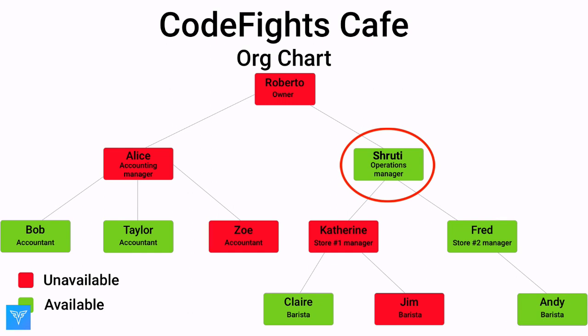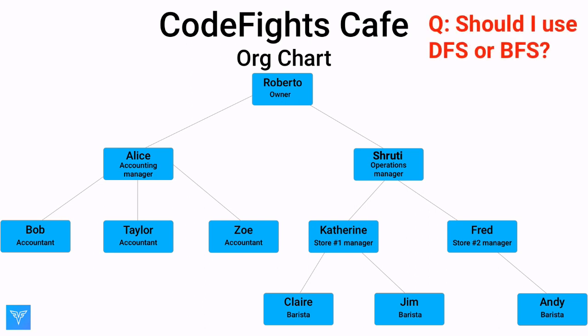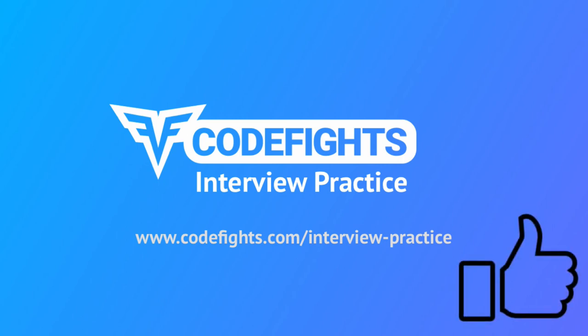For both of these problems, you could have used either DFS or BFS to find the answer, but one was better suited to the question. This is true for most problems. The data structure you're searching and the constraints of the problem you're solving will indicate the use of one search strategy instead of the other. The more you practice, the more you'll be able to recognize whether DFS or BFS is the best choice in a given situation. Go to Interview Practice to read our in-depth tutorial, complete with DFS and BFS implementation codes, and to practice on real interview questions. Thanks for watching this video, give us a thumbs up and be sure to subscribe to the Codefights YouTube channel.